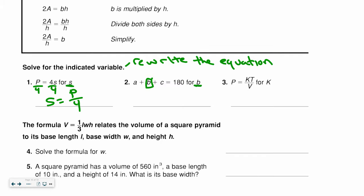For number 2, I'm solving for B. So I have to get rid of the A, and I have to get rid of the C. So what I do on one side, I do on the other. So it just becomes 180 minus A minus C. Remember, I cannot combine them.